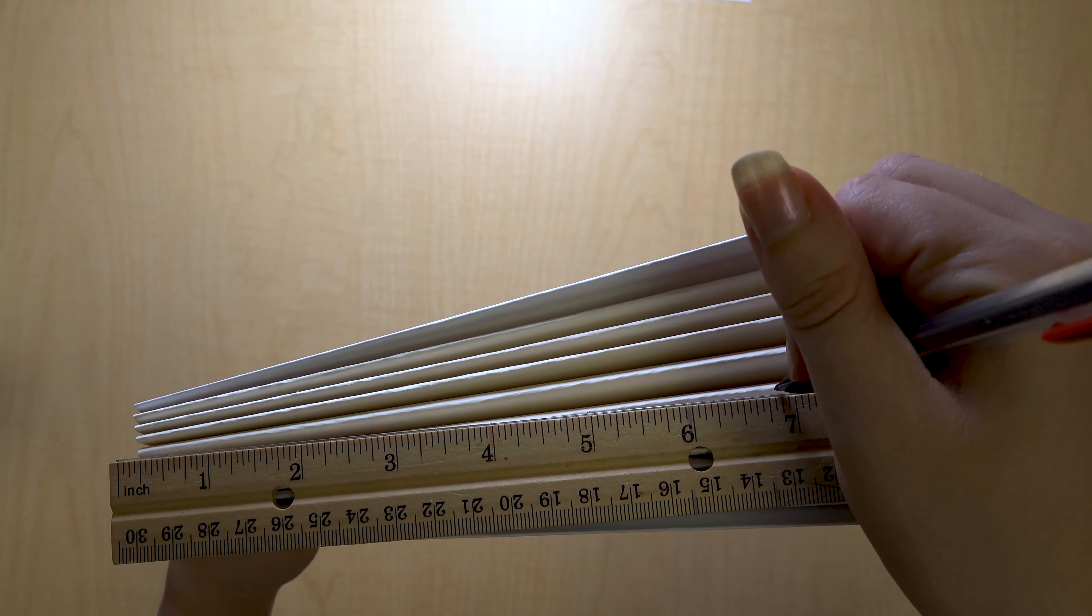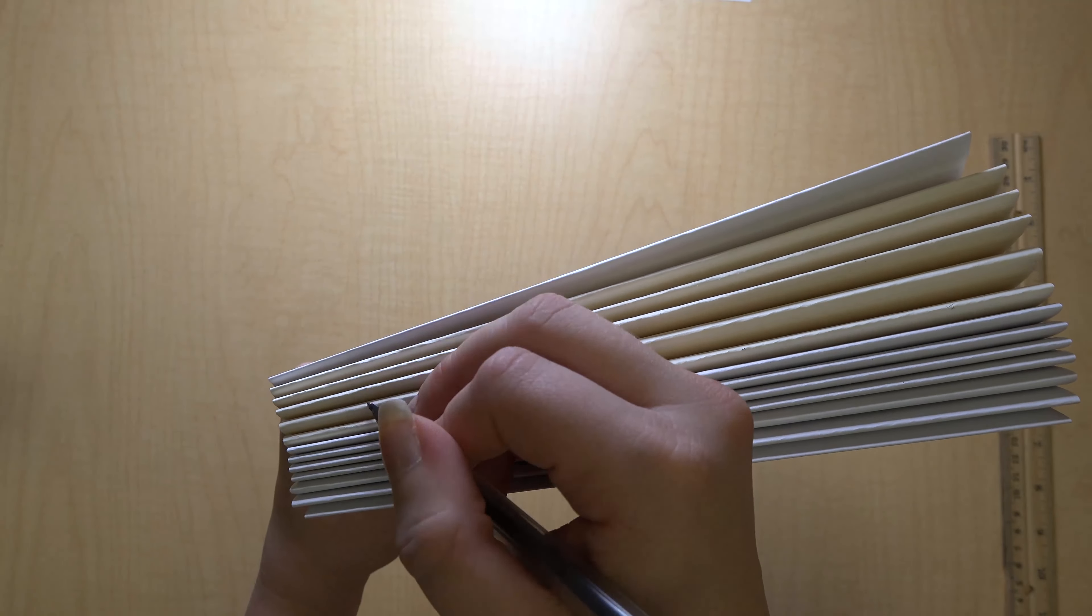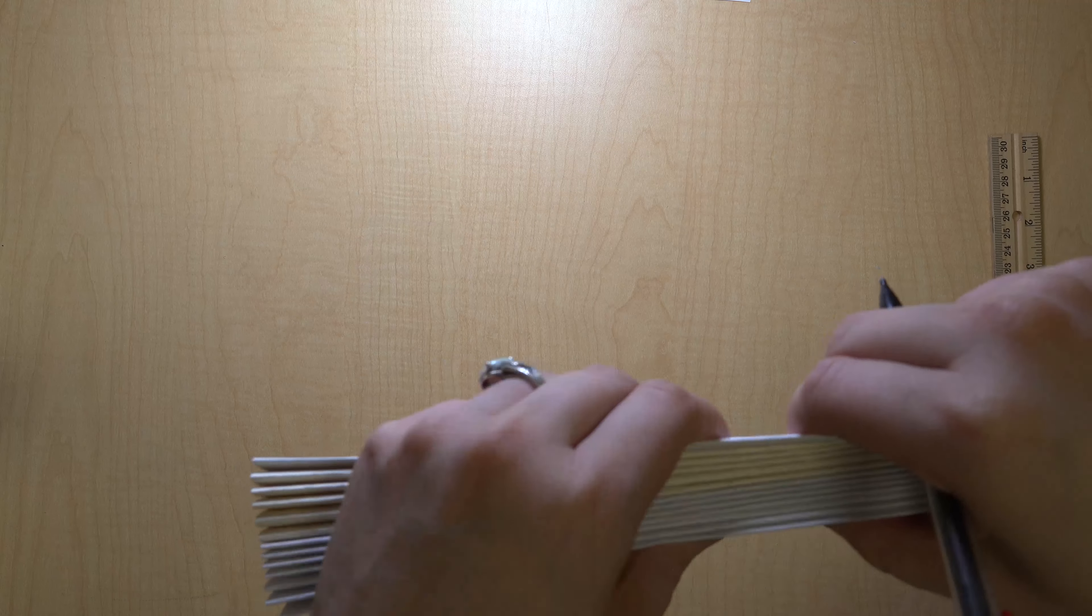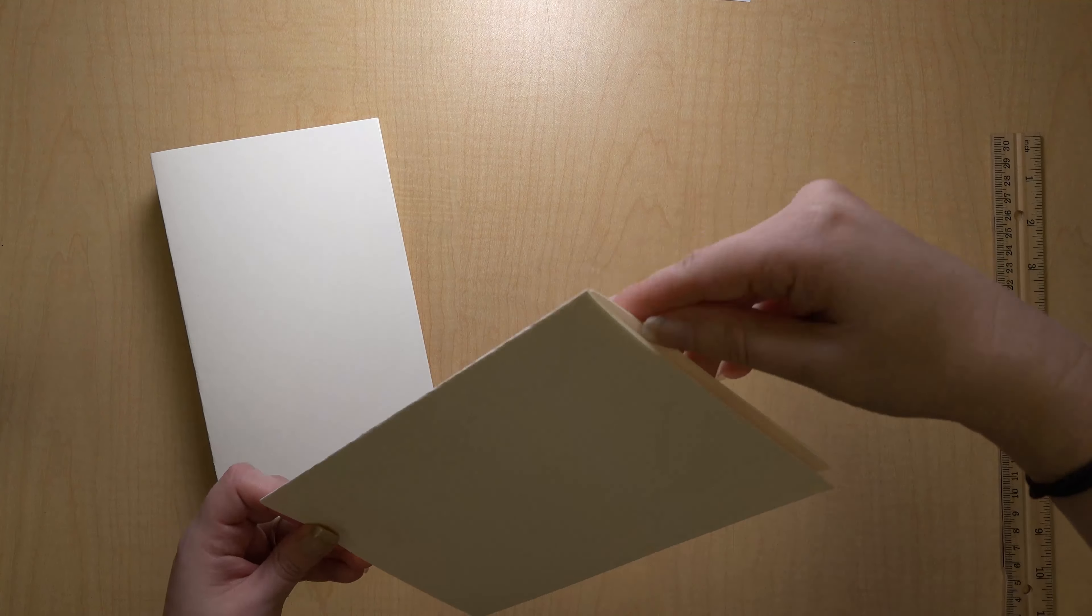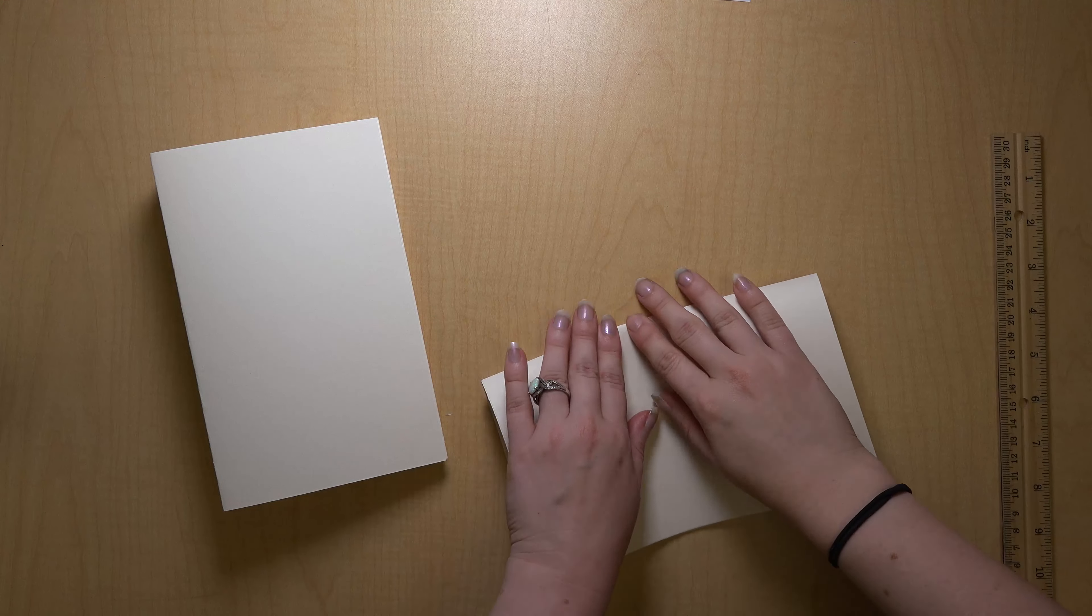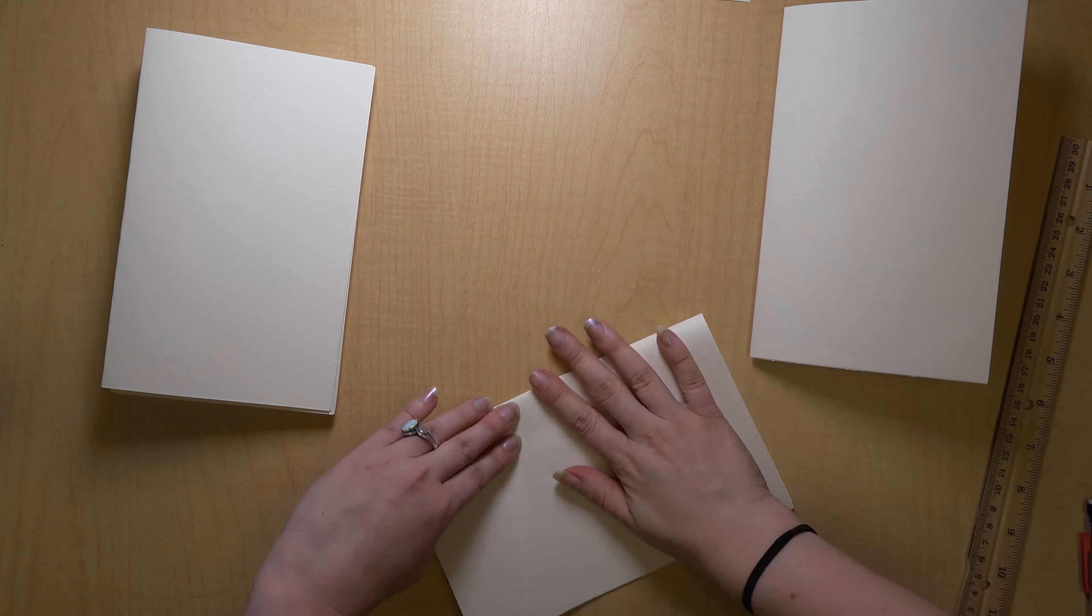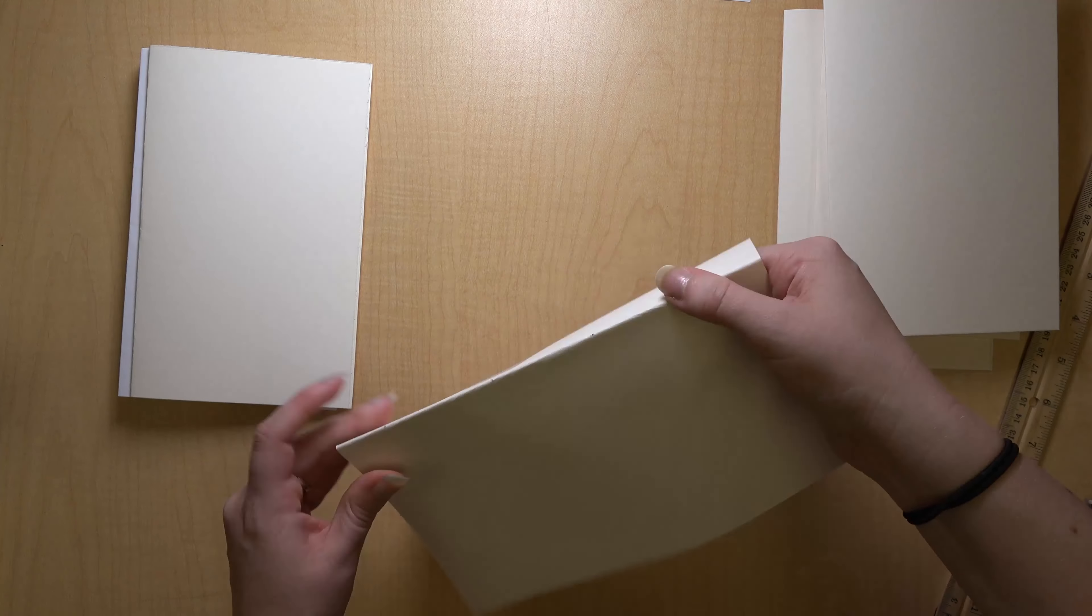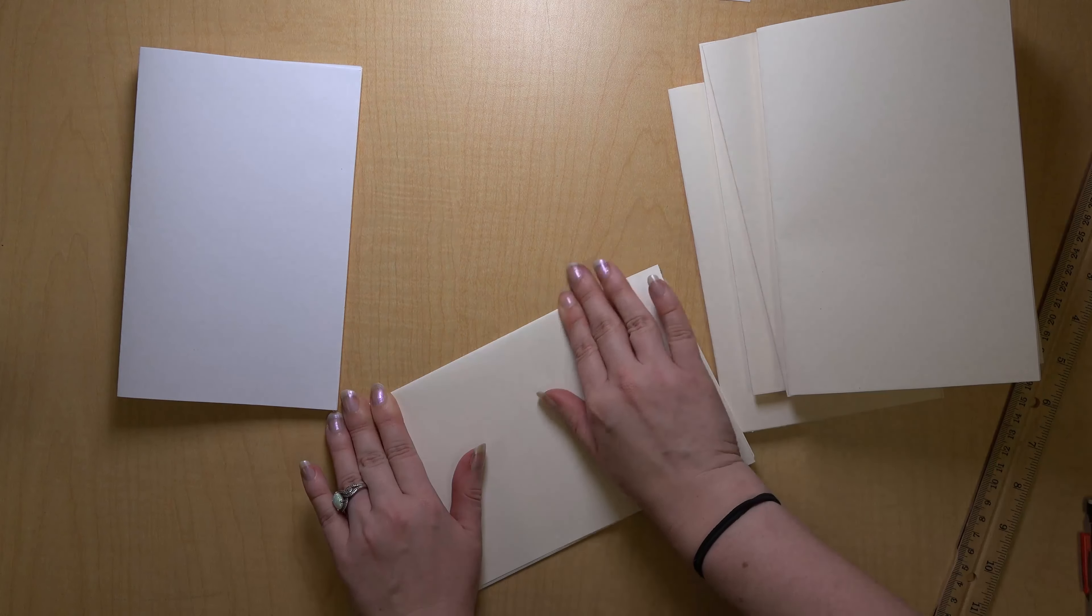If you're making a larger notebook, you might need to add more, or you can make two if you're making a very small notebook. Either way, make it an even number. Take one signature at a time and fold it the opposite way so that the mark you drew on the fold is now on the inside.